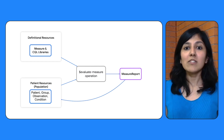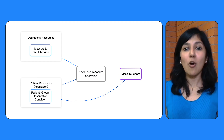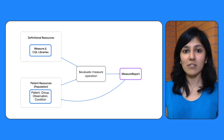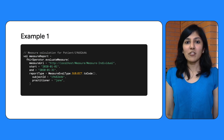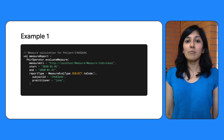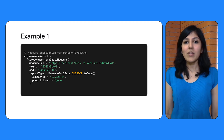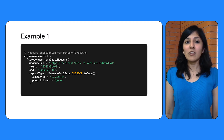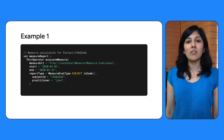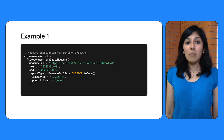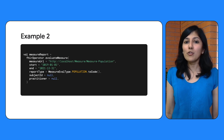A measure resource references a CQL library that contains the definitions of the calculation to be performed — that is, the numerator and denominator. The FHIR Evaluate Measure operation takes in a measure and returns a measure report resource, which represents the result of calculating a measure for a specific subject or a group of subjects. To evaluate a measure defined in an implementation guide, the Evaluate Measure API may be used. A measure may be calculated for an individual subject or a group of subjects, with the difference noted in the subject ID for each case.